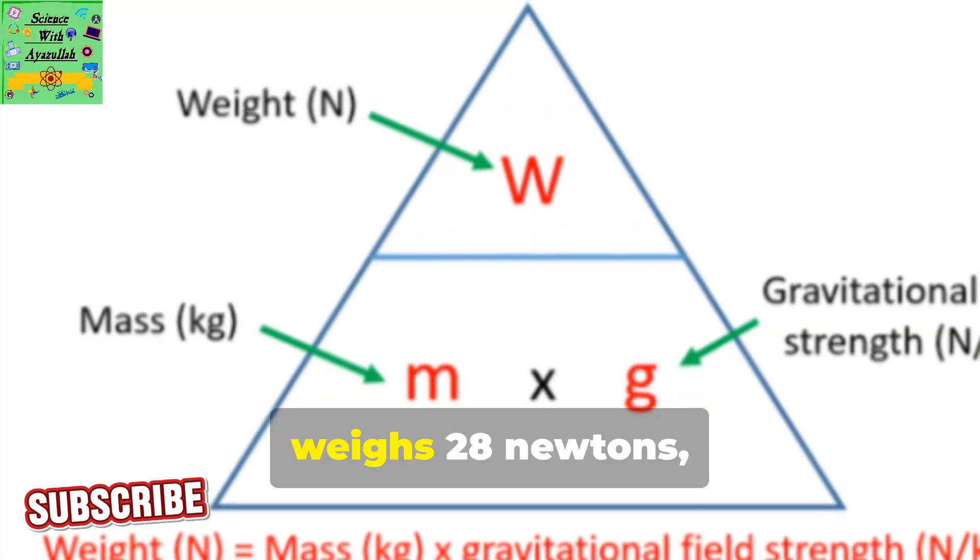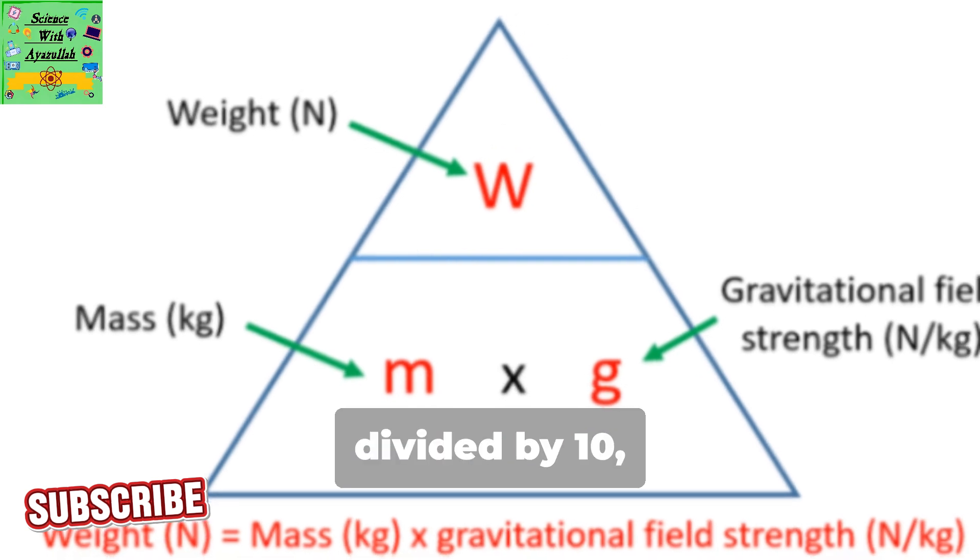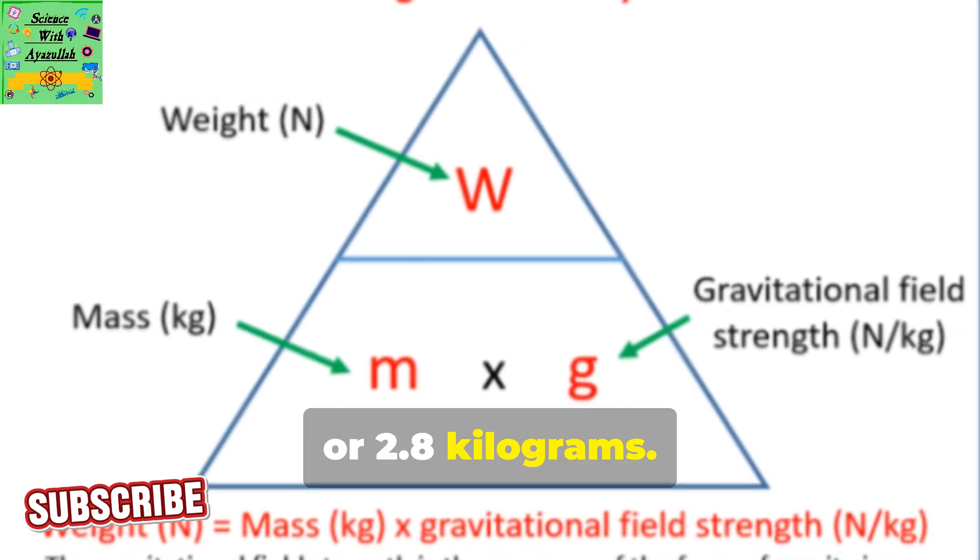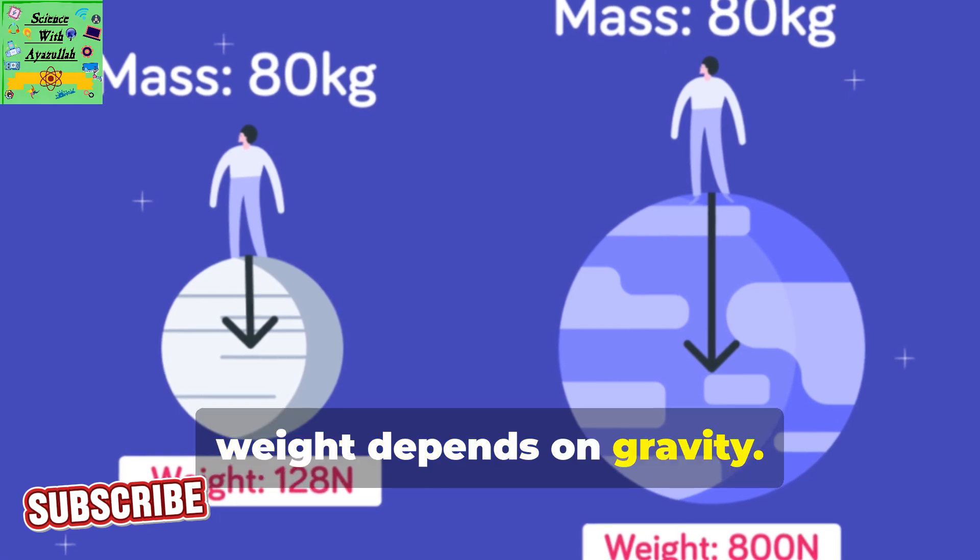If a game console weighs 28 newtons, its mass is 28 divided by 10, or 2.8 kilograms. Remember, mass stays the same. Weight depends on gravity.